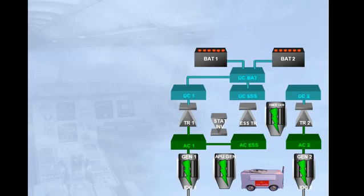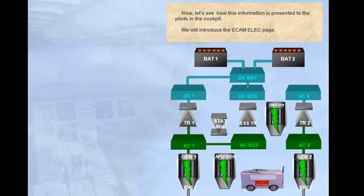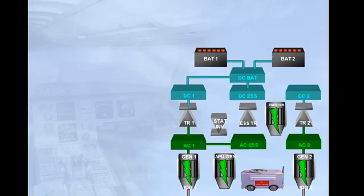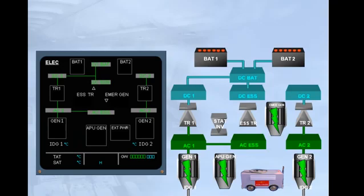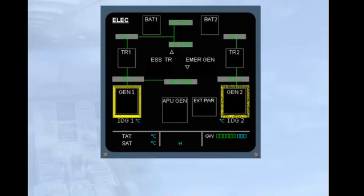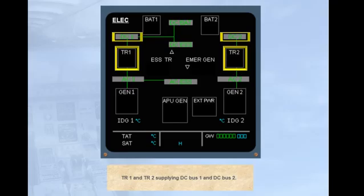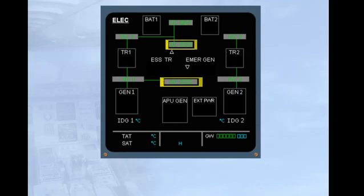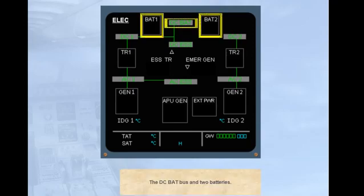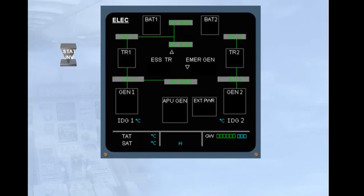Let's see how this information is presented to the pilots in the cockpit. We will introduce the ECAM electrical page. You can see that most of the components we have talked about are displayed on the ECAM page. Gen1 and Gen2 supply AC bus 1 and AC bus 2. TR1 and TR2 supply DC bus 1 and DC bus 2. The two essential buses are supplied by the left side, and the DC bat bus and two batteries are also shown. Note that the static inverter is not displayed on the ECAM page.